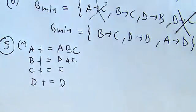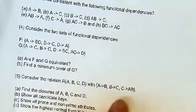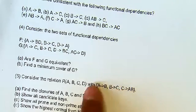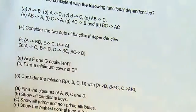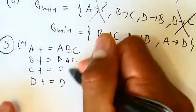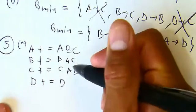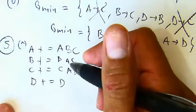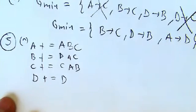For C+, C determines A and B, so C+ = {A, B, C}. Nothing determines D on its own, so if nothing determines D, then D+ = {D} only.